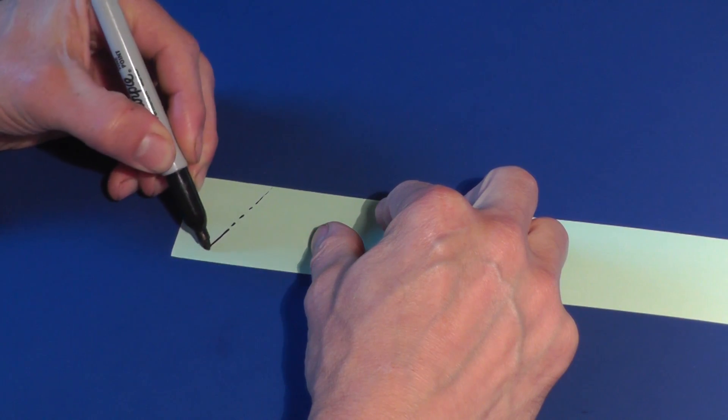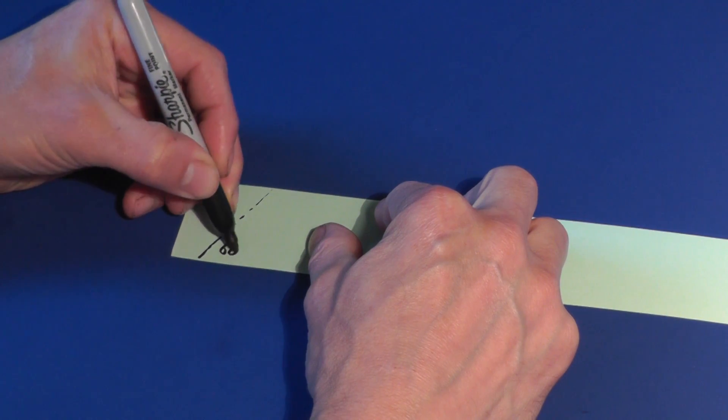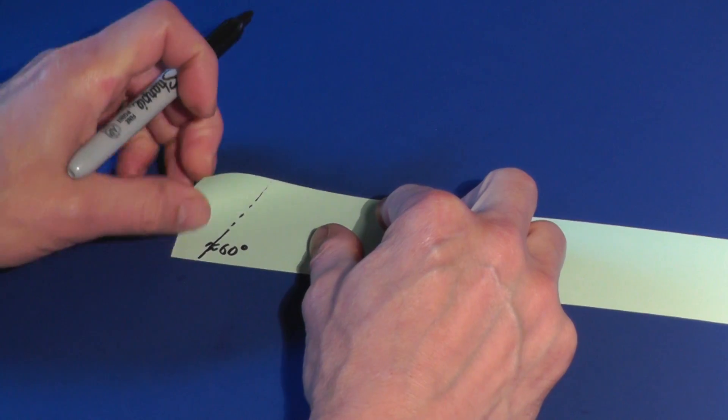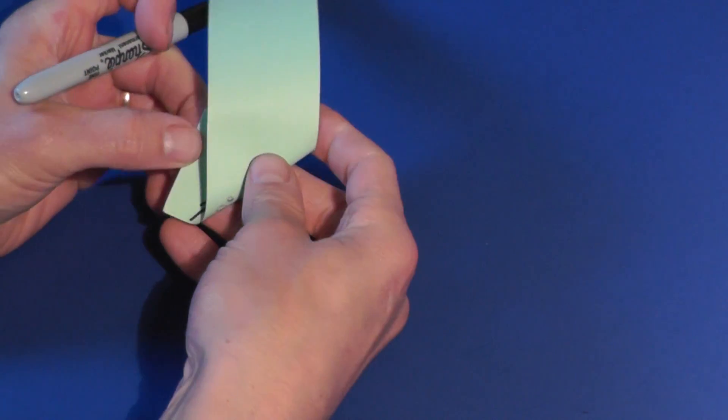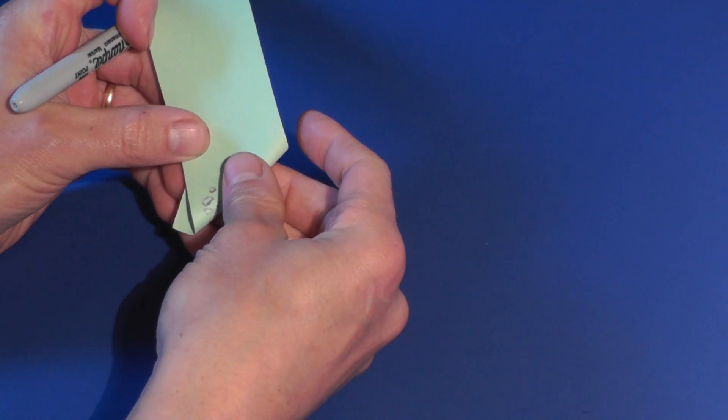Start by folding a crease that makes an angle that's approximately 60 degrees from the bottom edge. You don't have to be very accurate with this first crease.